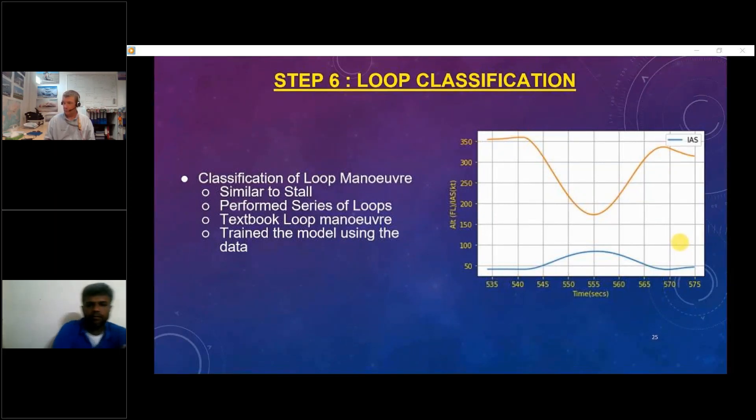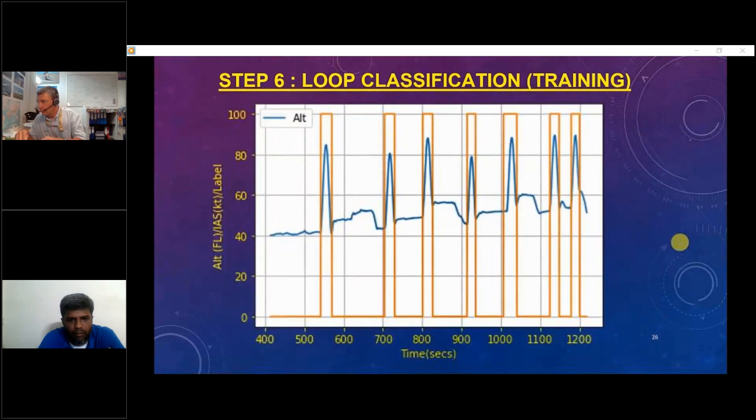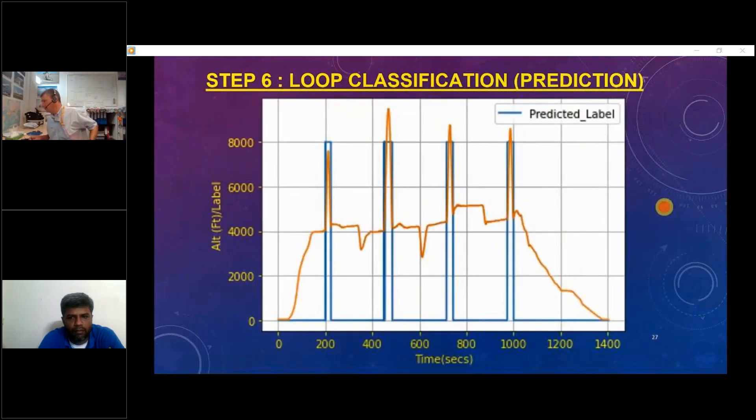Now that we have finished the stall, we move on to the next part, loop. The idea is take two simple classification tasks, stall and loop. We performed series of loops, textbook loop maneuvers. You can see the training data, each and every point, the altitude is increasing and decreasing and coming back to the same point. Each point has been manually labeled as loop test points. We did almost 40 loops and trained the model. This data is a new data set which is over which the model is applied and then we get the predicted label. You can see all the predicted labels here. The loop test points are perfectly identified by the machine learning model.